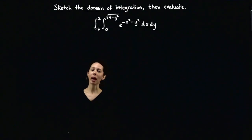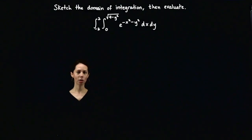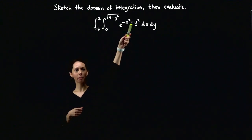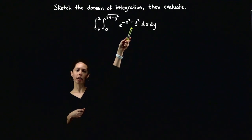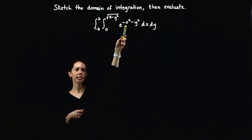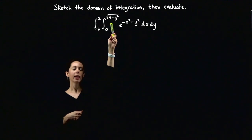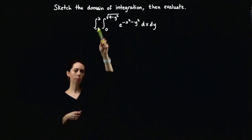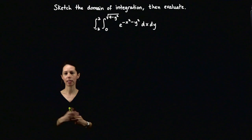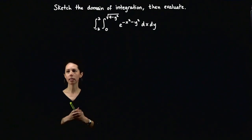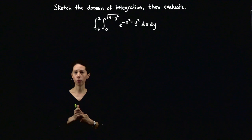In this problem we are being asked to sketch the domain of integration and then evaluate the integral of e to the negative x squared minus y squared over a region in R2, where x is between 0 and the square root of 4 minus y squared and y is between negative 2 and 2. First let's sketch this domain of integration and then we'll finish the integral to get a final answer.